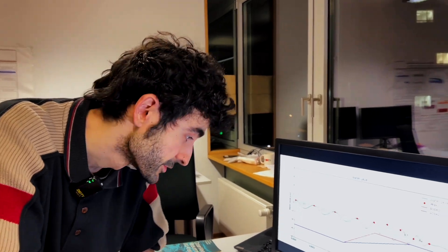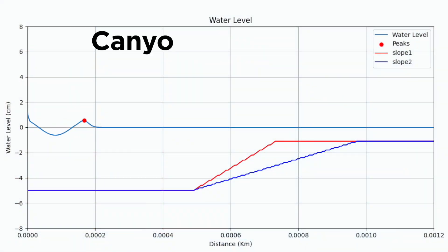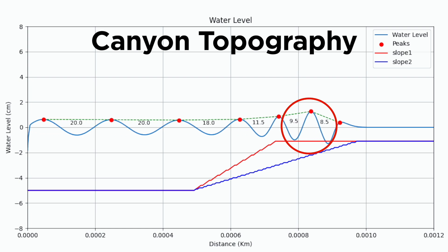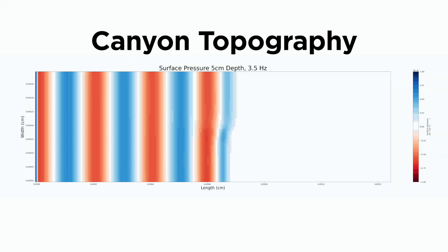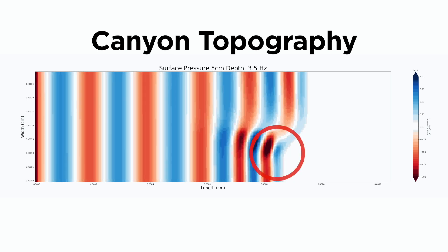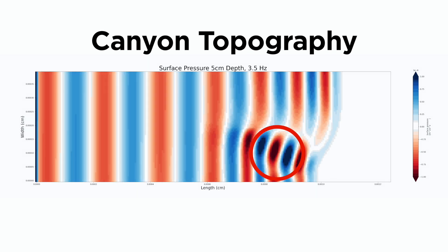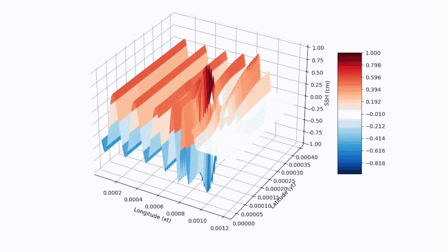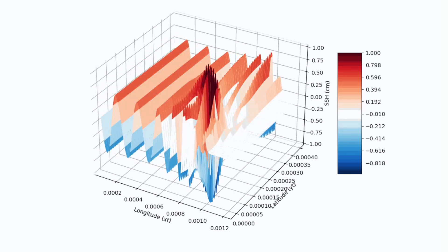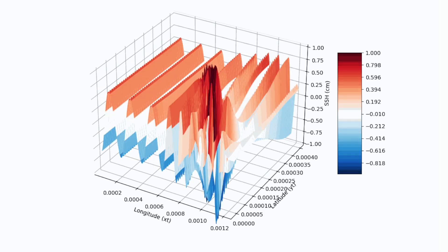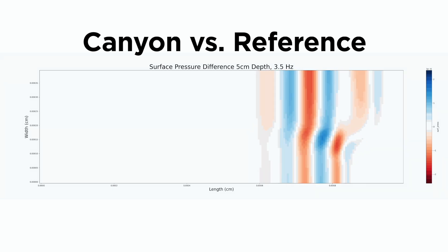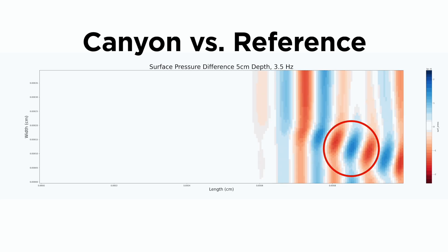In the second simulation, which includes the canyon, the setup remains the same as the first scenario up until the waves reach the topography. The key difference arises when the wave reaches the canyon: the left side of the wave flows through the canyon faster than the section traveling over the slope. This speed difference causes the wave to refract to the right when the canyon wave reaches the second plateau. When this refracted wave interacts with the wave from the slope, they overlap and amplify. The difference between the canyon simulation and the reference simulation confirms wave amplification is possible when the two waves converge.